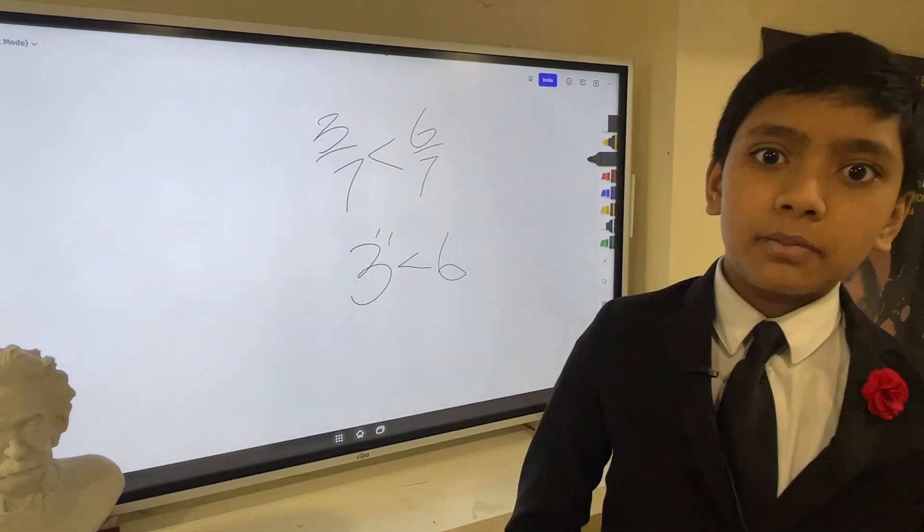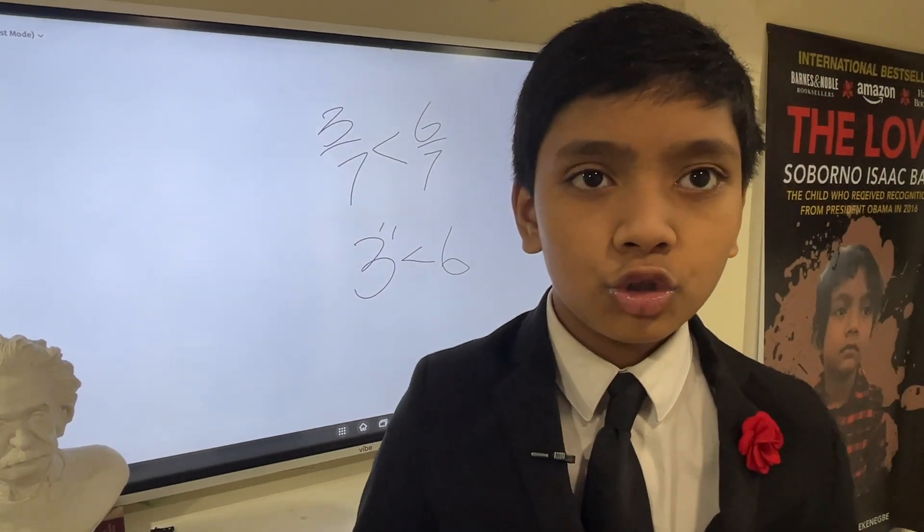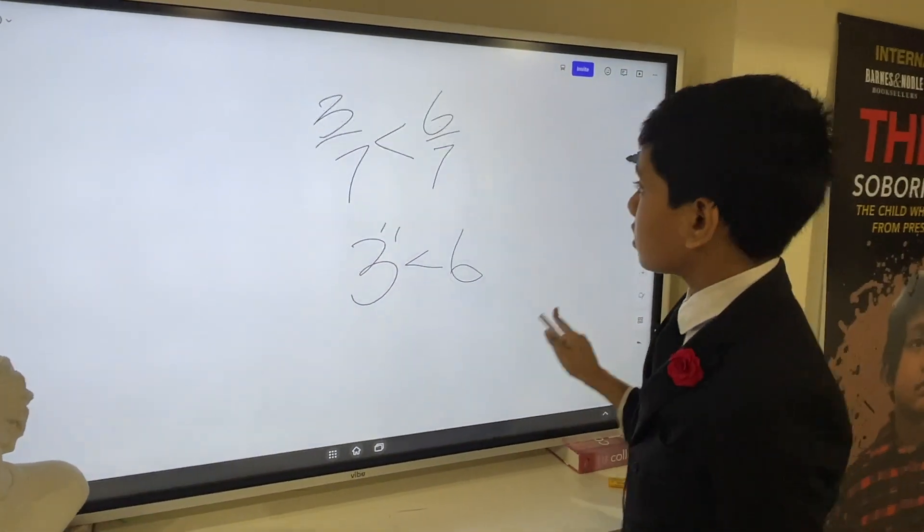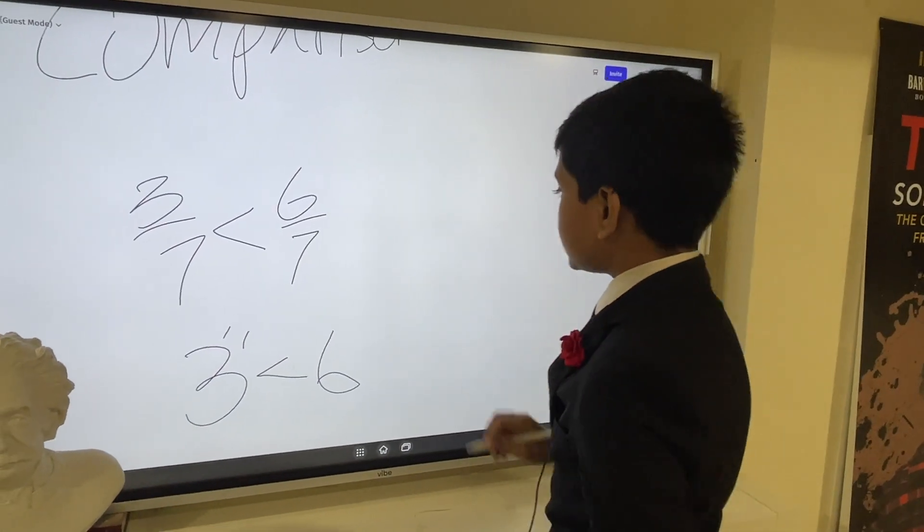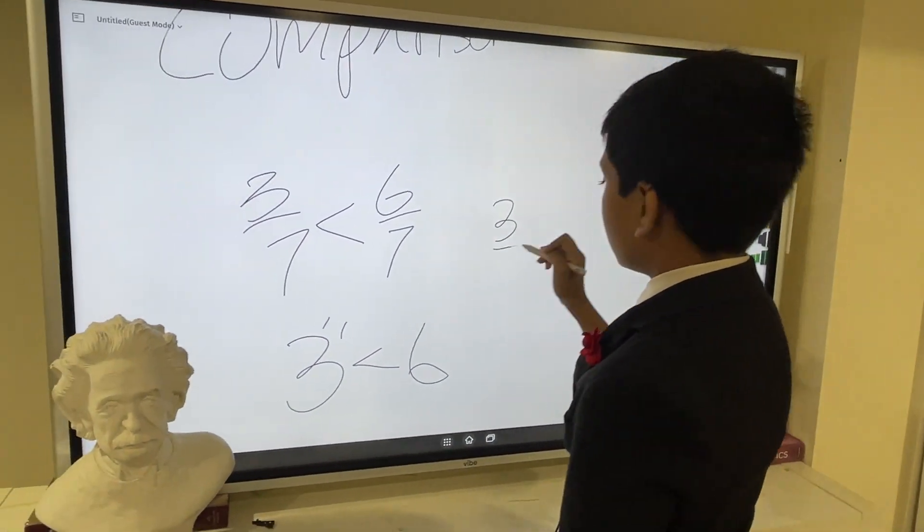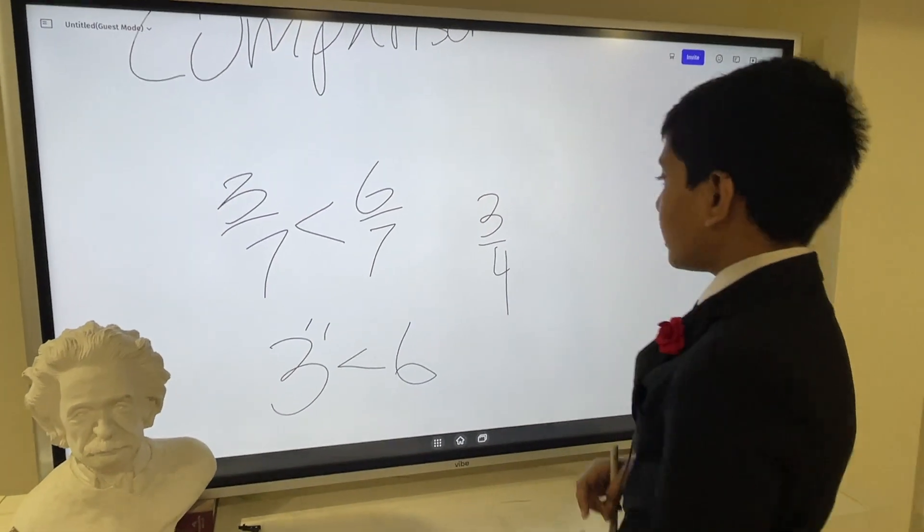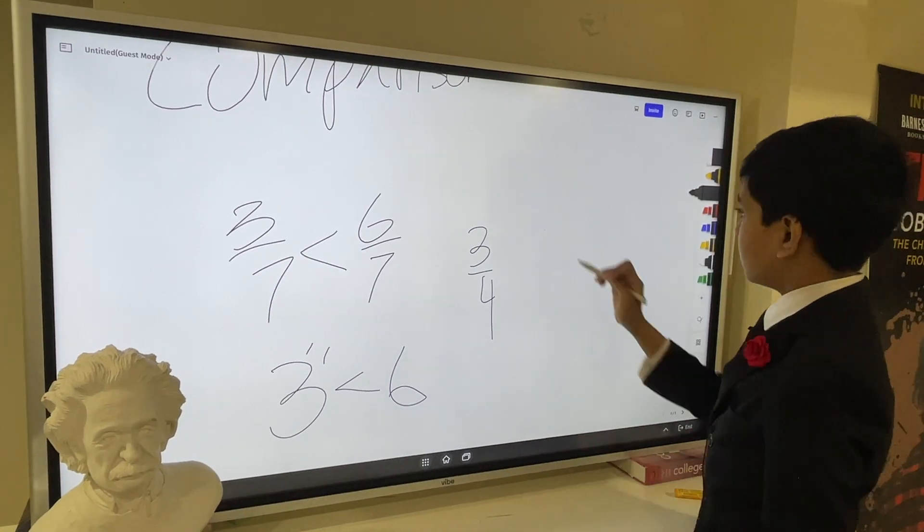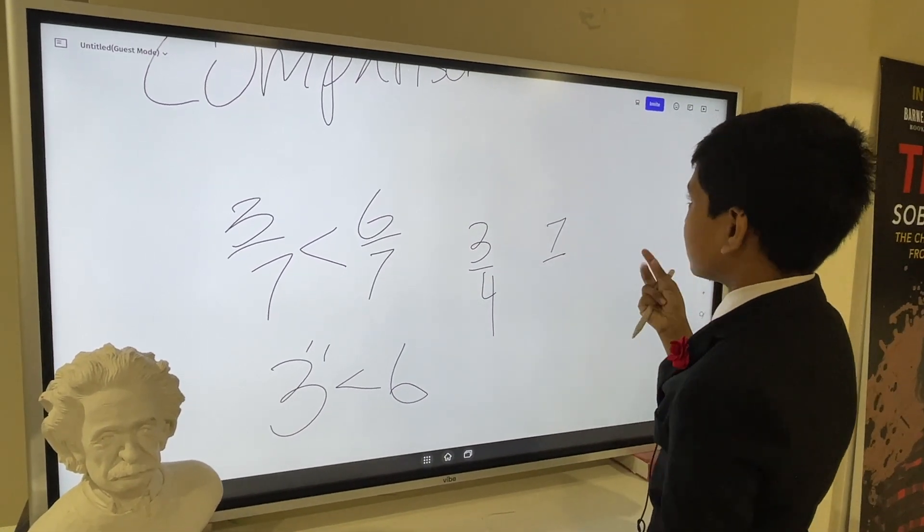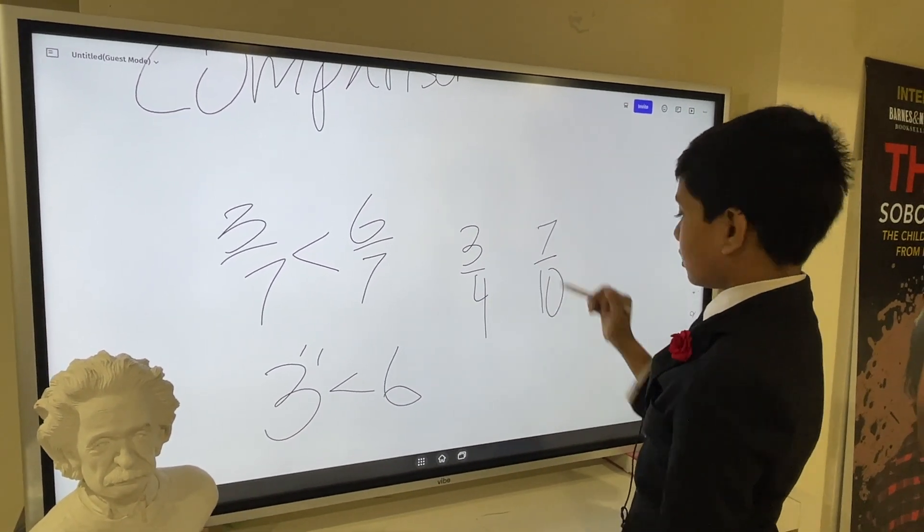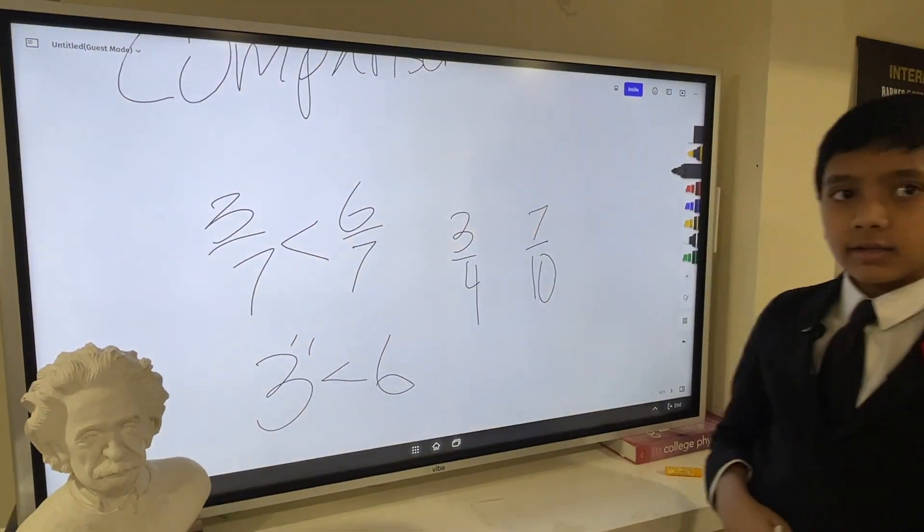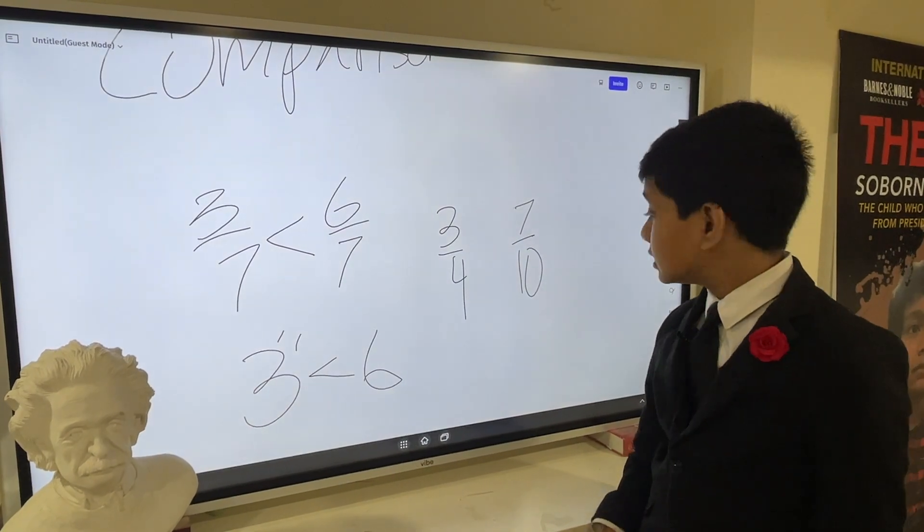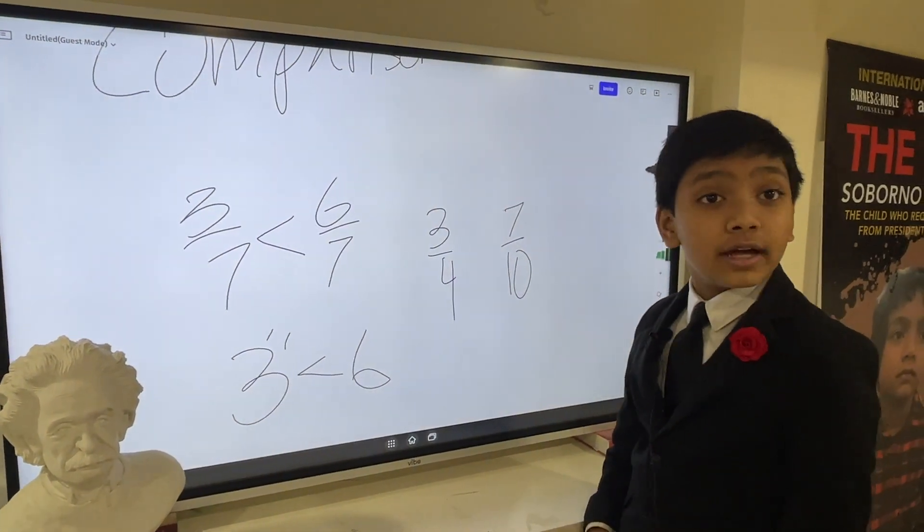Now we're going to do this with different denominators. Let's try this with three over four and seven over ten. Which one do you think is larger? The one with the larger numerator? Well, it's not the one with the larger numerator.